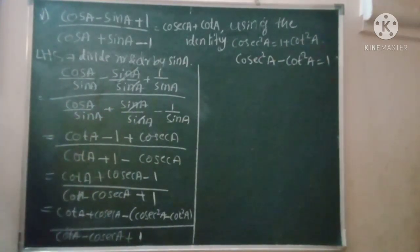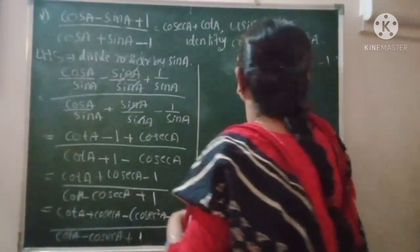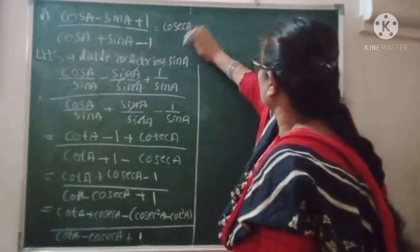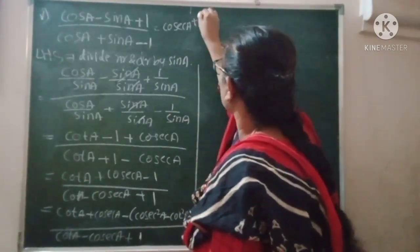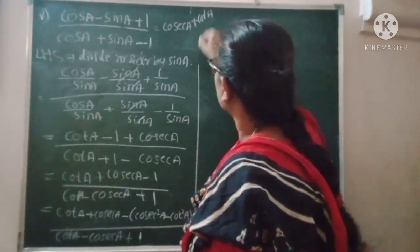Cot A minus cosec A plus 1. Now notice that cosec² A minus cot² A = 1.